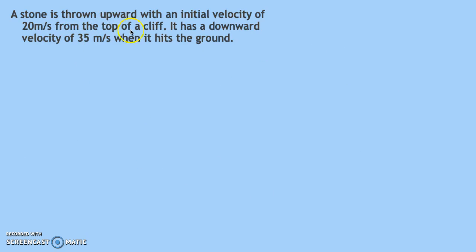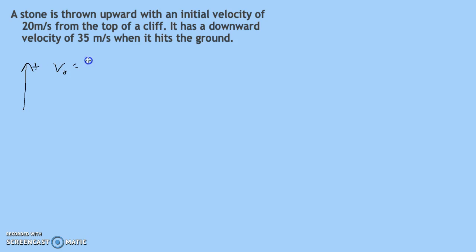Here's the next situation: we have a stone that's thrown upward with an initial velocity of 20 meters per second from the top of a cliff. It has a downward velocity of 35 meters per second when it hits the ground. We'll say that up is positive. So the initial velocity is positive 20 meters per second, our acceleration would be negative 10 meters per second squared, and our final velocity is going to be negative 35 meters per second.